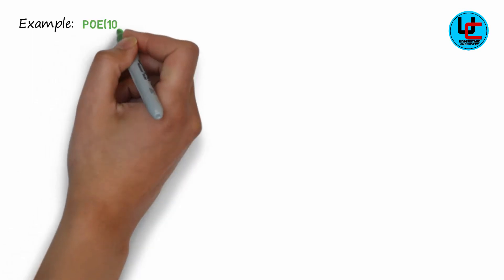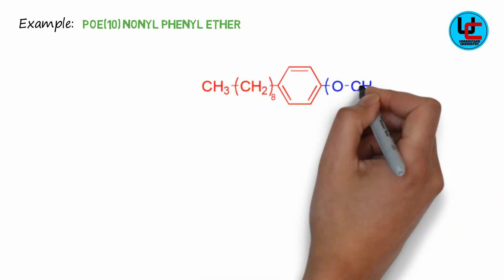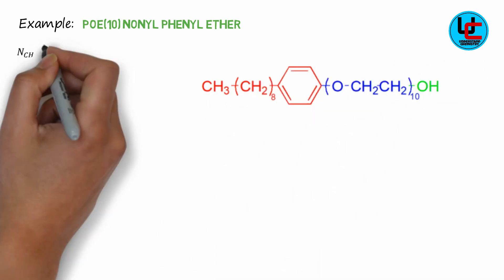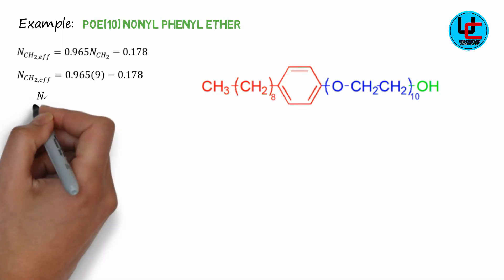Now consider again polyoxyethylene 10 nonyl phenyl ether and we apply here effective chain length method. In this formula, we treat CH2 and CH3 as same since both have same value. That is why we put in place of CH2, 9 instead of 8.